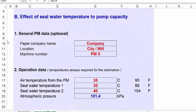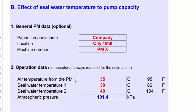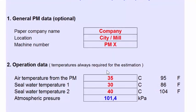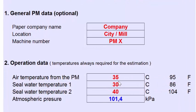Let's look at the required input data for the application. First, you can give general paper machine data if you want — that means paper machine name, location, and machine number. For the calculation, the following input data is required: the input temperature of the air from the paper machine. According to our measurements, it is normally between 33 and 40 degrees Celsius. In a typical case, 35 degrees Celsius (95 Fahrenheit) is a pretty good starting point for the calculation.